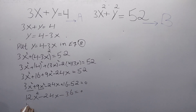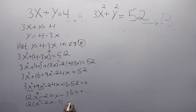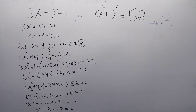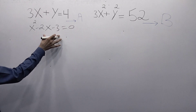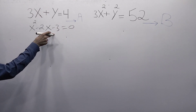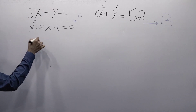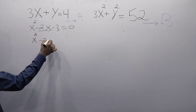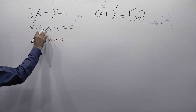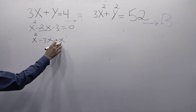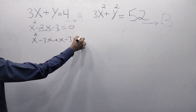Taking 12 as a common factor, we get x squared minus 2x minus 3 equals 0. This is a quadratic equation. We will solve it using the factoring method. Splitting the middle term: minus 2x is replaced by minus 3x plus x, giving x squared minus 3x plus x minus 3 equals 0.